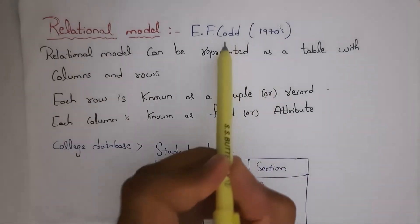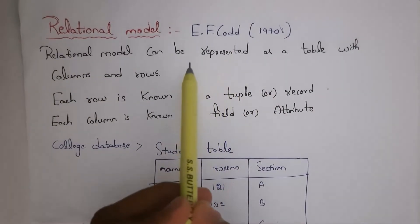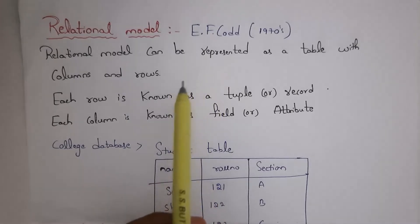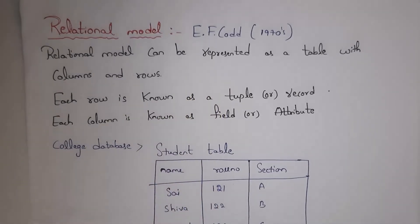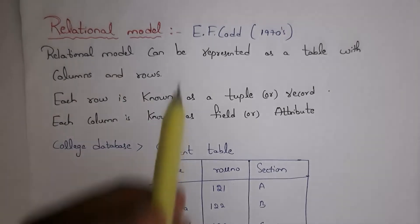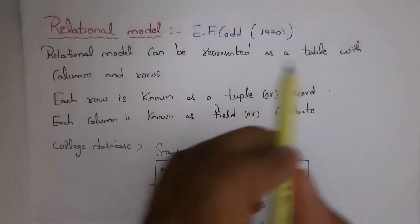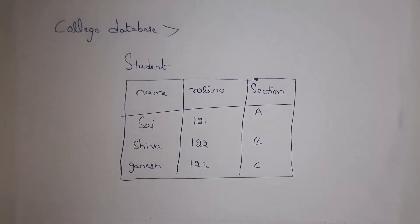E.F. Codd is the person who developed relational model in 1970s. Relational model is a database which shows data in the form of tables, that is, in the form of rows and columns. Relational model can be represented as a table with columns and rows.